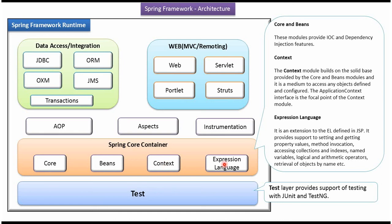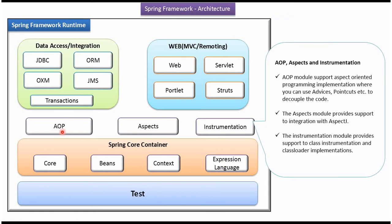Expression Language provides support for setting and getting property values, method invocation, and retrieval of objects by name, etc. The AOP module supports Aspect Oriented Programming implementation, where we can use Advices, Point Cuts, etc. to decouple the code.